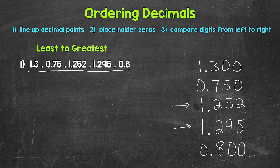Now we move on to comparing digits from left to right, so we can start putting these in order. We'll start with the place furthest to the left and work our way right. The place furthest to the left here is the ones place, so that's going to be our greatest place value. We have one, zero, one, one, and zero. So we want the smallest digit in value here since we are going from least to greatest. That's zero, so we have this narrowed down to these.